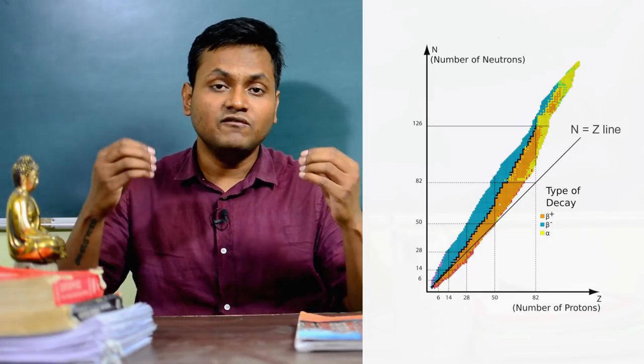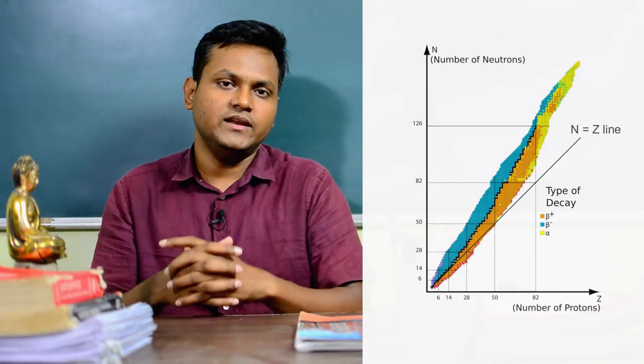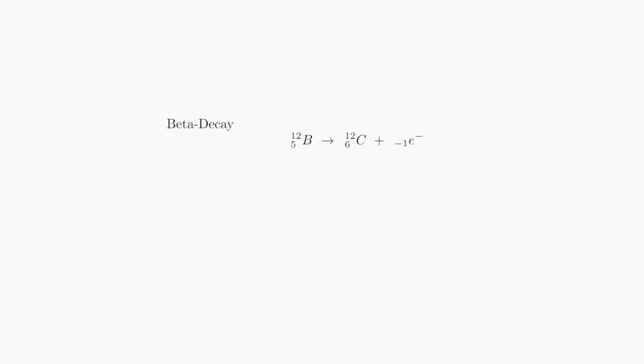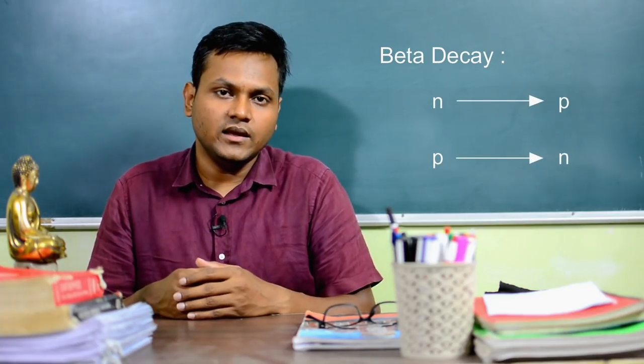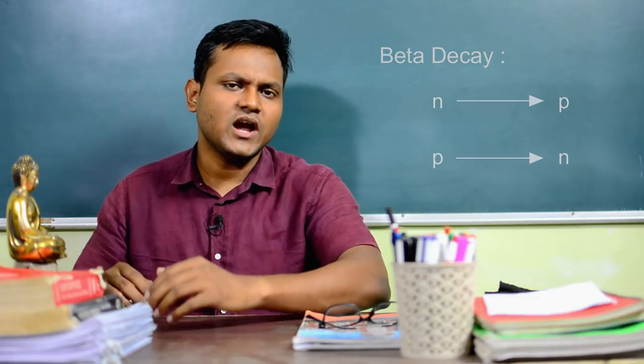These unstable nuclei can become stable when excess protons convert to neutrons or excess neutrons convert to protons. Nuclear reactions involving these transformations are known as beta decay reactions. As an example of negative beta decay, consider a boron nucleus transforming into a carbon nucleus: one of the neutrons inside boron converts to a proton, changing the atomic number and making it carbon, which has six protons. Understanding why this reaction takes place will also help explain the nature of the NZ graph.